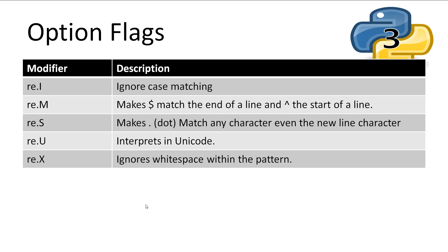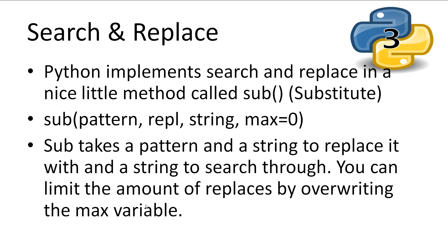You may have noticed that at the end of our match and search methods we had a field with something like re.M pipe re.I. These are called flags. We can use flags to alter how the regular expression is run, which is useful to make our expressions smaller and easier to use. The flags we used earlier were insensitive case search — so even if our word had capitals it would still find it — and the newline separator that allows the caret and dollar to match at the end and start of the line rather than just at the start of the string. Search and replace is also a handy feature. Python implements this with the sub method, short for substitute. The sub method takes a pattern, the replacement text, and the string to replace in. There is also an optional parameter to set the max amount of replacements to make; by default it replaces all found instances of the matching text.